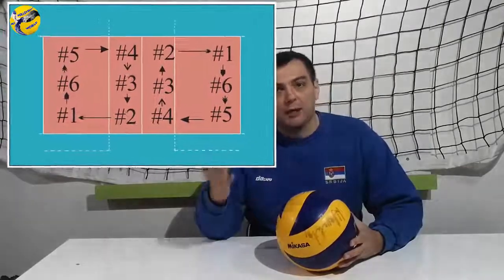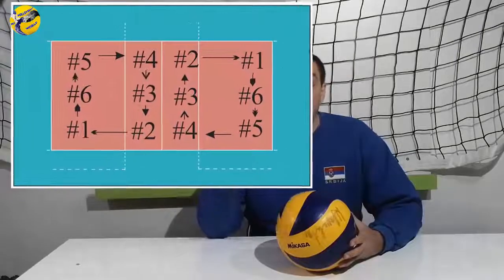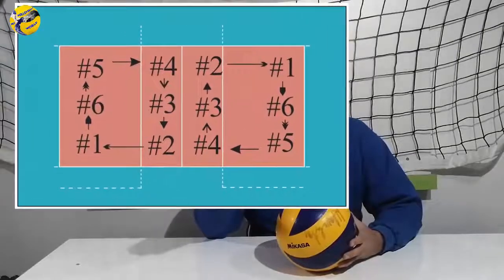So what is rotation? Rotation is a change of positions of the players on the court in a clockwise motion. Players rotate from position 6 to 5, 5 to 4, 4 to 3, 3 to 2, 2 to 1, and 1 to 6.